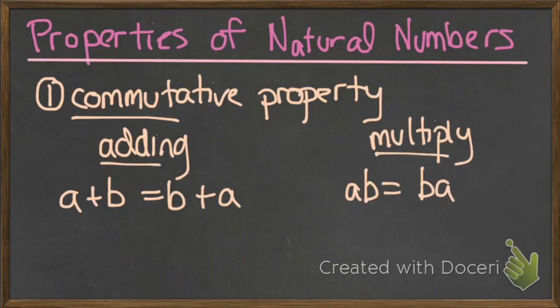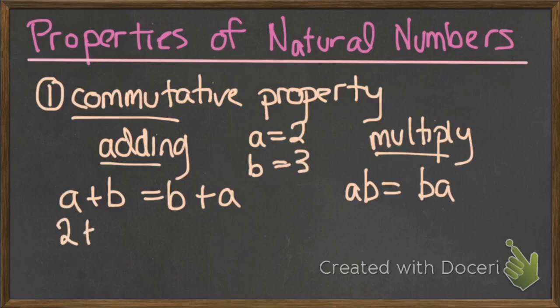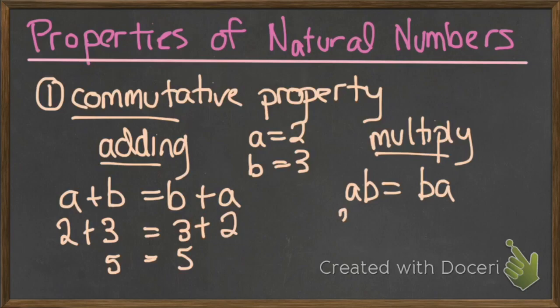Let's use real numbers: let's say a is 2 and b is 3. To prove it, 2 plus 3 is equal to 3 plus 2 — 5 equals 5, so this is true. And just like multiplying, 2 times 3 should be the same thing as 3 times 2, and 6 on this side is equal to 6 on the other side. So this rings true.